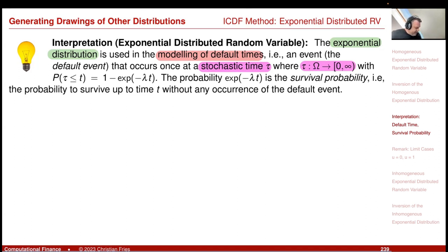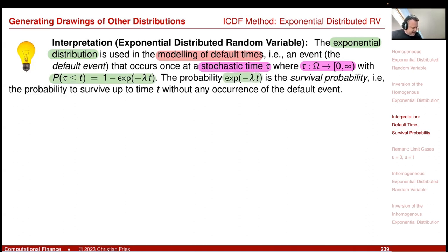The distribution function has a nice interpretation: P(tau ≤ t) is the probability that the event happened before time t. The complementary event gives 1 minus (1 minus exponential of minus lambda t), which is just exponential of minus lambda t. This is the survival probability — the probability that the event did not happen up to time t.